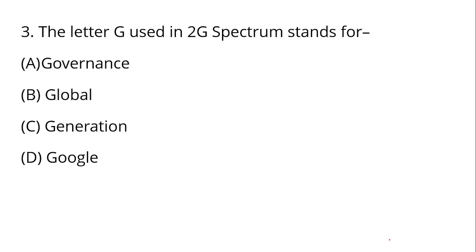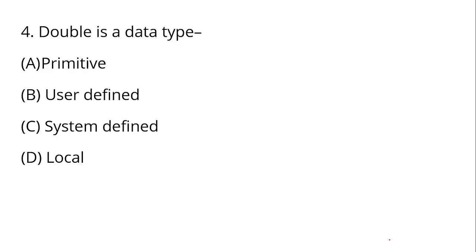The letter G used in 2G Spectrum stands for — 2G network, 3G network, 4G network, 5G network — the question asks what does the G in 2G stand for? G stands for Generation — Second Generation network. That is your right answer.